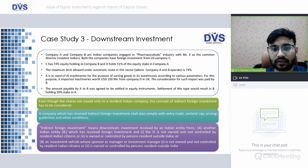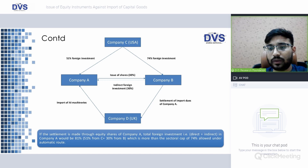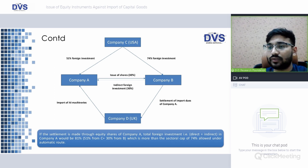Even though shares are issued only to a resident Indian company (Company B), the concept of indirect foreign investment must be considered. The company which has received indirect foreign investment must also comply with entry route, sectoral cap, pricing guidelines, and other conditions. Indirect foreign investment means downstream investment received by an Indian entity from another Indian entity which has itself received foreign investment — which is exactly this case. Company A is not owned and not controlled by resident Indian citizens, so this qualifies as indirect foreign investment.